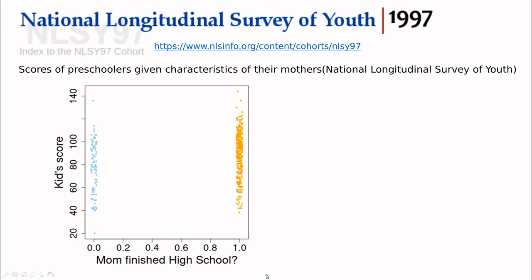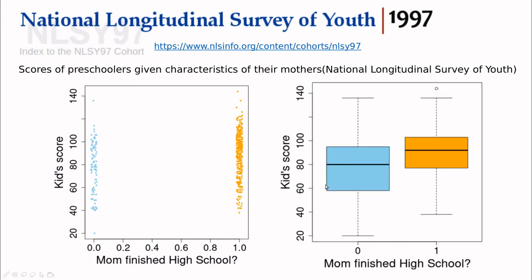But the question is, is this variable affecting the kids score? Let's take a look at the boxplot. This seems that yes, the answer could be yes. You can see that the median value is higher than this one. The interquartile interval is higher than this one. So I would say yes, but is there a way to quantify this?